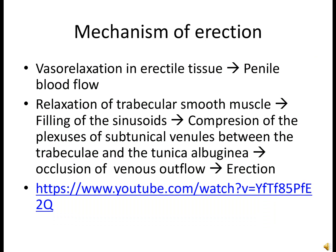The mechanism of erection in short: vasodilation in the erectile tissue leads to increased penile blood flow. Relaxation of the trabecular smooth muscle leads to filling of the sinusoids. There is compression of the sub-tunical venular plexus between the trabeculae and the tunica albuginea, and occlusion of venous outflow leading to erection. A YouTube link for a video description of the mechanism of erection is available.